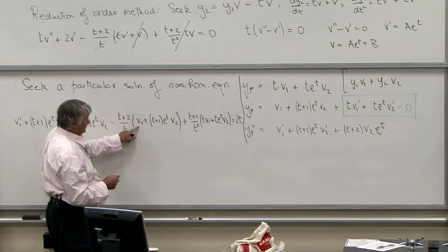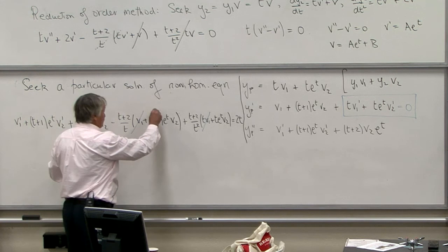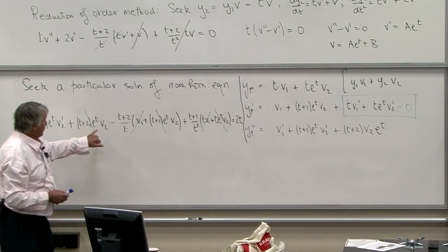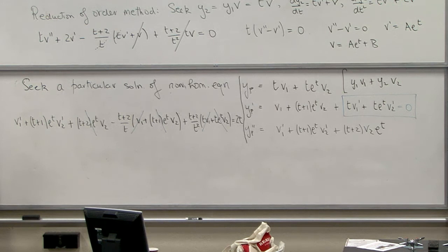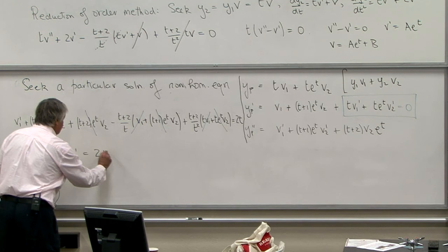Looking at the terms with V₁, they cancel; the coefficients of V₂ disappear as well, because in general the coefficients of V₁ will be d²y₁/dt² + p(t)·dy₁/dt + q(t)·y₁, which is always zero. I'm left with the simple equation: V₁' + (t+1)e^t·V₂' = 2t.